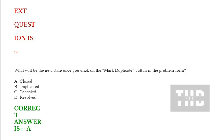What will be the new state once you click on the mark duplicate button in the problem form? Option A: closed. Option B: duplicated. Option C: cancelled. Option D: resolved. Correct answer is option A.